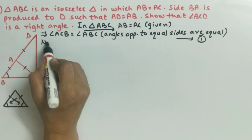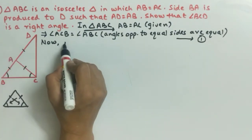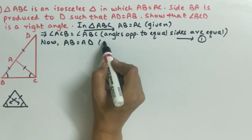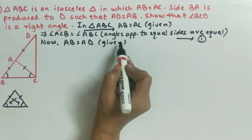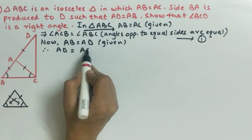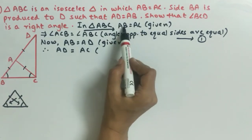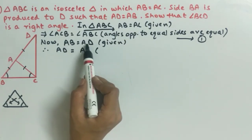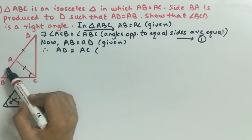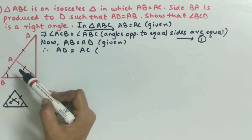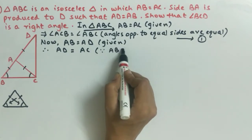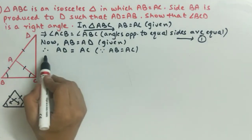AB हमें AD के equal भी given है question में — यह AB, AD के equal है। Therefore, AD becomes equal to AC। क्योंकि यहाँ पर हमारे पास था AB, AC के equal है, और यहाँ है AB, AD के equal है। तो obviously AD और AC भी हमारे आपस में equal होंगे। इसका reason: since AB is equal to AC.